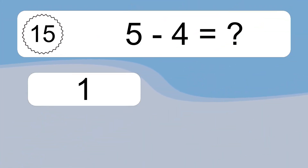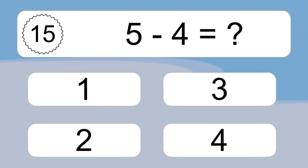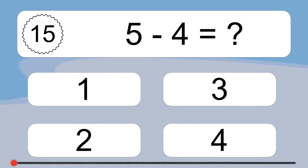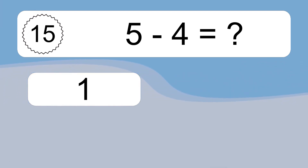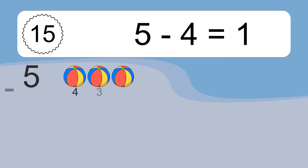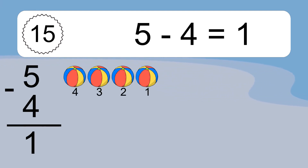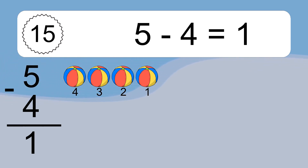5 minus 4 equals what? 5 minus 4 equals 1. Let's count it: 4, 3, 2, 1.